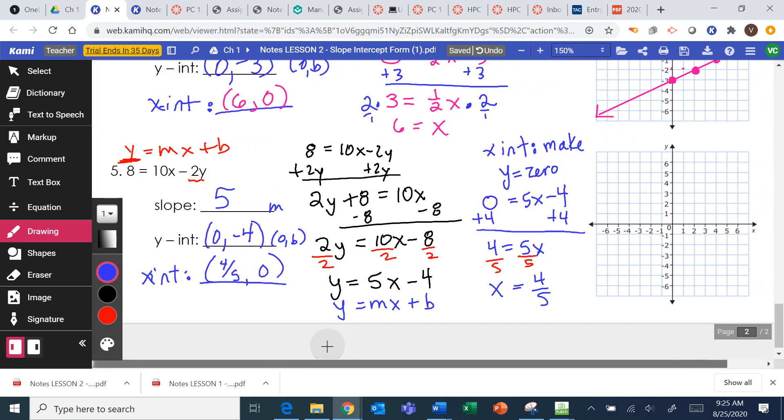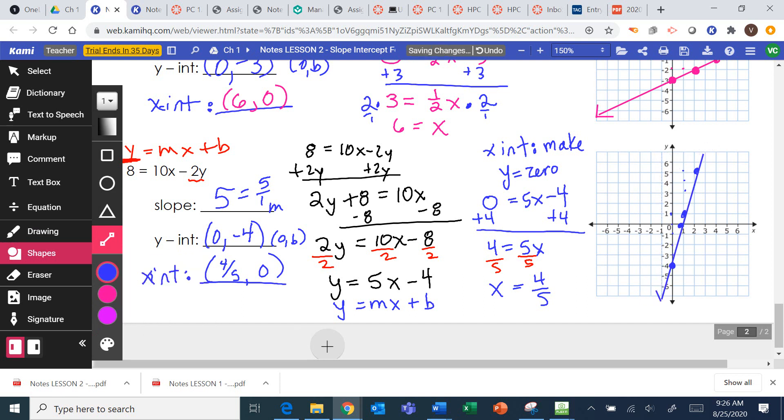So we go to graph it. We can plot those ordered pairs. There's 0, negative 4. 4 fifths, 0 is just approximately there. It's kind of hard to be exact on that one. And then I'm going to use my slope. My slope is 5. But I need it to be a fraction. Grace, how do I make 5 into a fraction? Perfect. 5 over 1. So I'm going to start at negative 4. I'm going to go up 5 over 1. Up 5 over 1. Use a straight line to connect them. Okay, so you have two worksheets due.